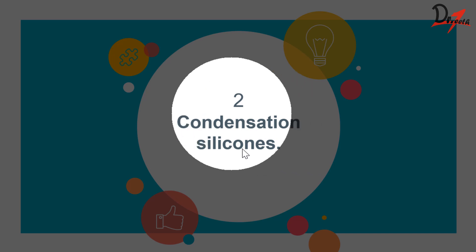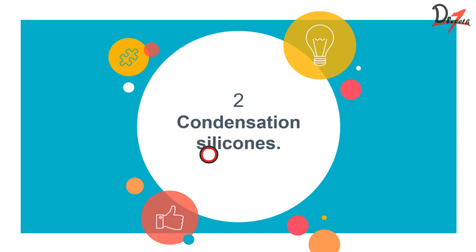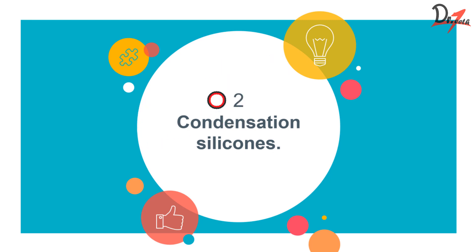There are two types of silicones: condensation silicone, which we are discussing in this video, and addition silicone, which we will discuss in the next video. The difference between them lies in the way they react — condensation silicone undergoes a condensation reaction and addition silicone undergoes an addition reaction. This happens because their terminal groups are different.